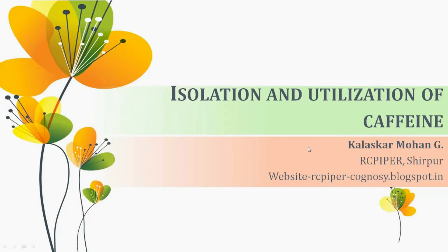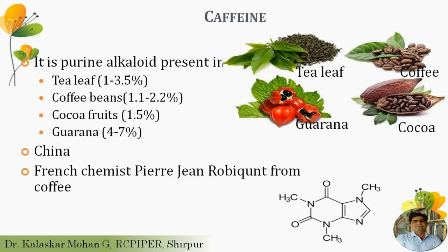We are going to discuss the isolation and utilization of caffeine from medicinal plants. Caffeine is a purine alkaloid present in nature in abundant amounts, specifically distributed in four plants in considerable higher amounts: tea leaves, coffee beans, coca fruits, and guarana. Guarana contains the highest amount of caffeine at four to seven percent, followed by tea, coffee, and then coca. Tea was introduced to the world by Chinese Emperor Shenu.